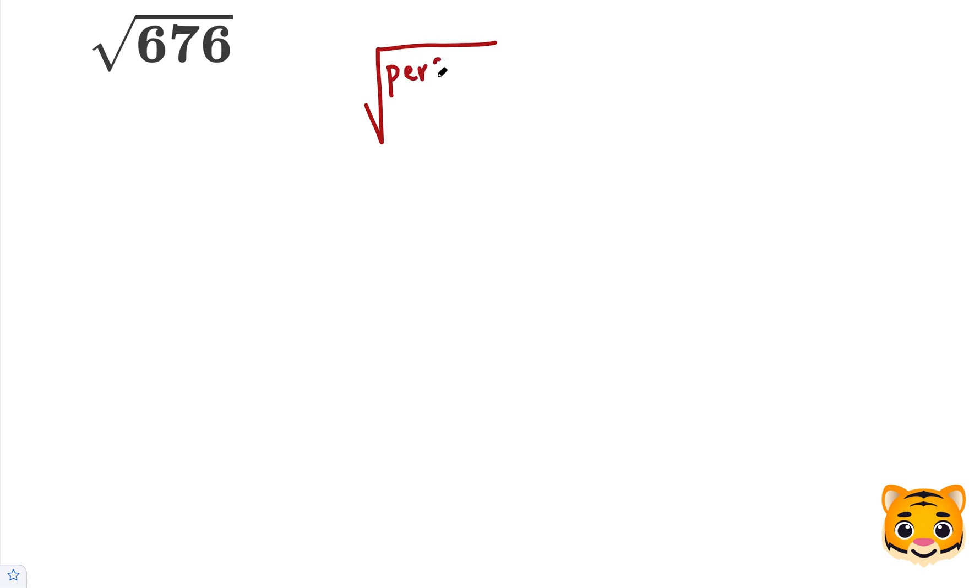A perfect square is a value that if you take the square root of that perfect square, your result will be a whole number.